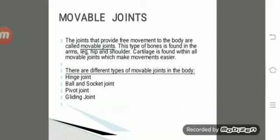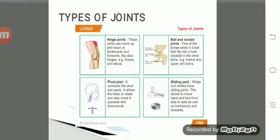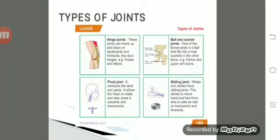Movable joints provide free movement of the body and are found in the arm, leg, hip, and shoulder. Cartilage is found within all movable joints, which makes movement easy. There are different types of movable joints: hinge joint, ball and socket joint, pivot joint, and gliding joint.